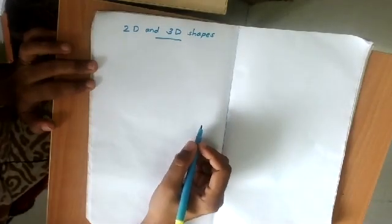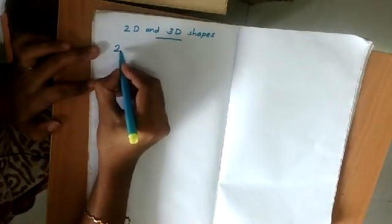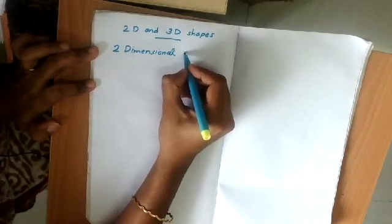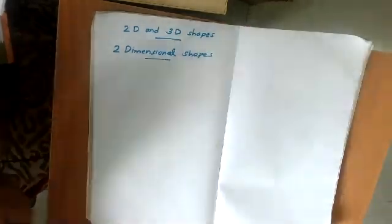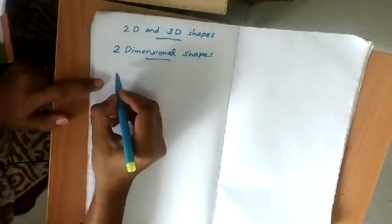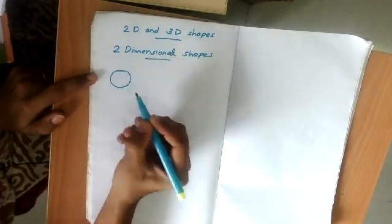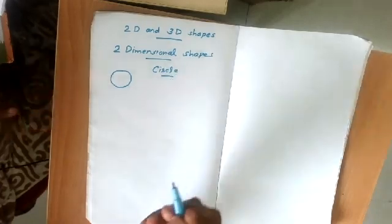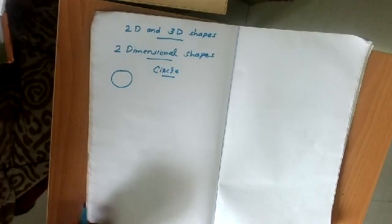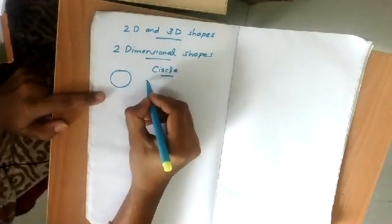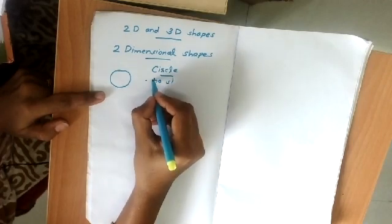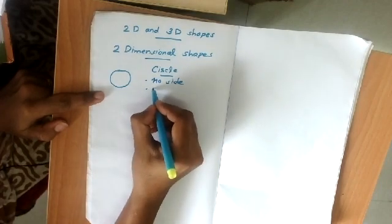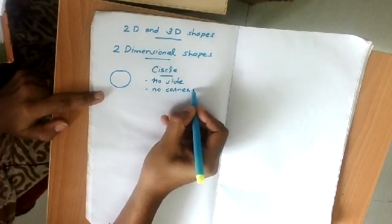Now first we will learn about two-dimensional shapes, also called 2D shapes. The first 2D shape is the circle. A circle has no sides and it has no corners.